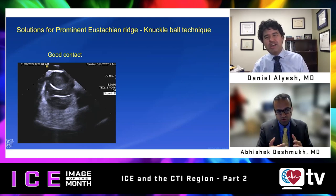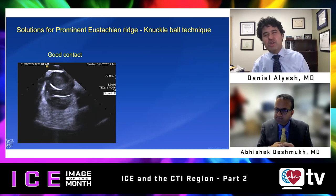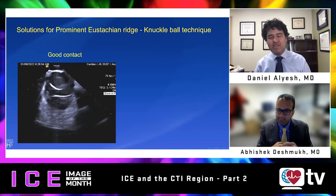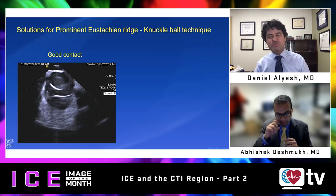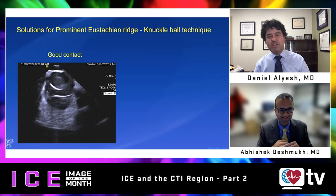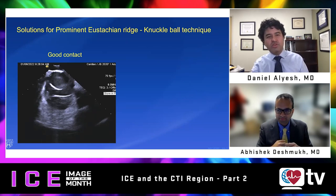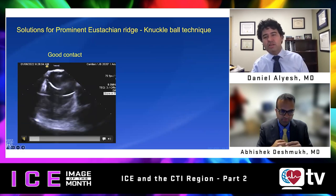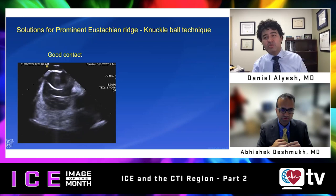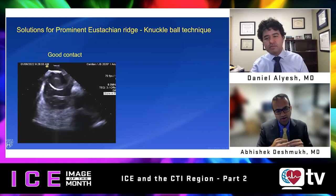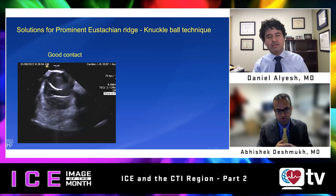I love this name 'knuckleball' — I've never heard it called that but I like it. We used to call it the Michigan loop, but clearly that was wrong because everybody does it. Can you walk us through how you make it and what you do with it to improve your contact with the isthmus?